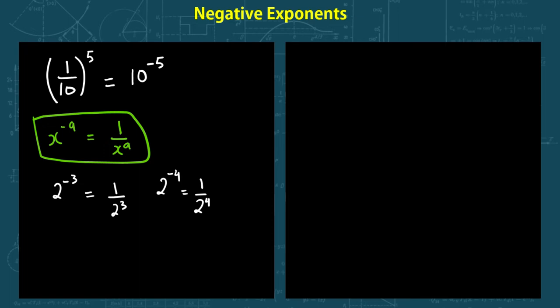What is 6 to the power of negative 1? It's basically equal to 1 over 6 to the power of 1, which is just 6. That's the inverse.